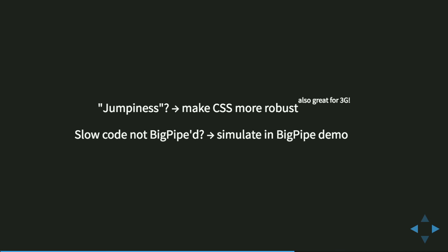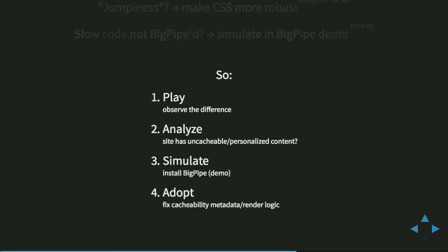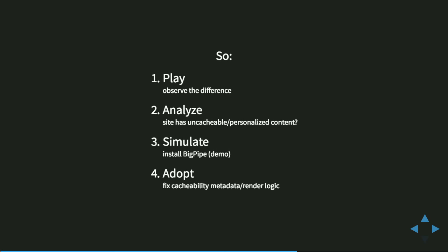The only other thing you may encounter is that something is not being delivered via BigPipe. It works automatically for any block you create, any custom block. In that case, simulate it first in the BigPipe demo — generate the HTML, put that in the block, see what it feels like. Then the next step is to fix your code and use a lazy builder, as Fabian explained. So this is pretty much the entire set of problems: either jumpiness, which you should fix anyway, or slow code not being delivered by BigPipe, which means you just need to adjust the code. Usually you won't need to do that.